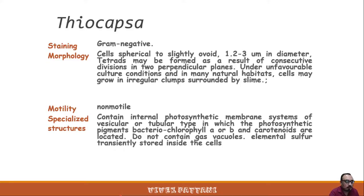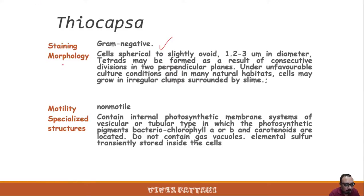Next I will discuss Thiocapsa. Thiocapsa: gram-negative cells are spherical to ovoid, 1.2 to 3 micrometers in diameter, and tetrads are also formed. They are non-motile and contain internal photosynthetic systems of vesicular or tubular type in which the photosynthetic pigments bacteriochlorophyll A or B and carotenoids are located.